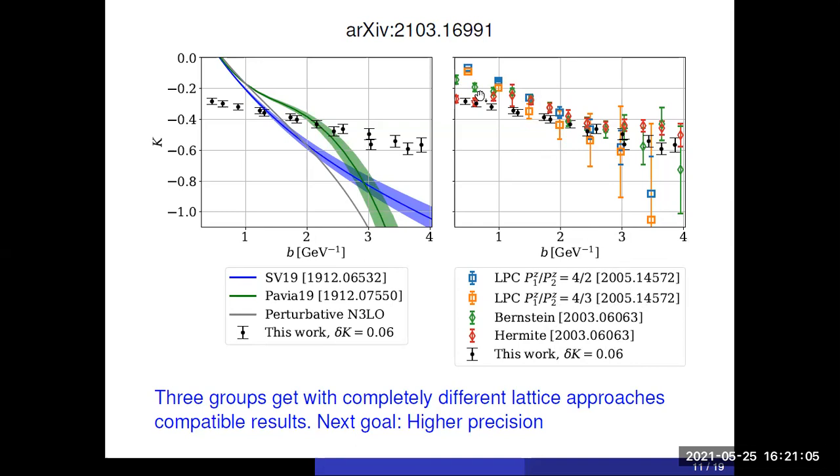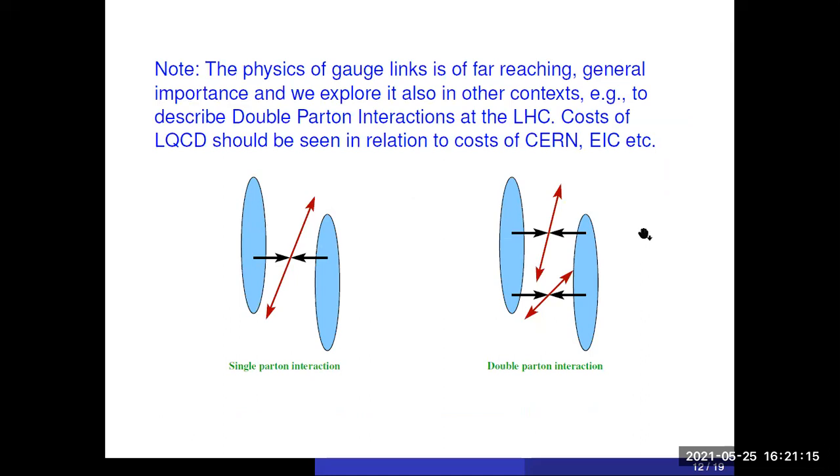So, presently, error bars are still large, but these are just the first determinations of the Colin-Soper function. And it's pretty clear that within a few years, this will become really precise.